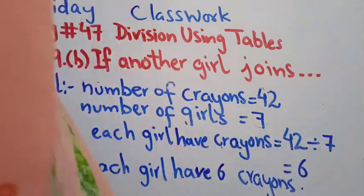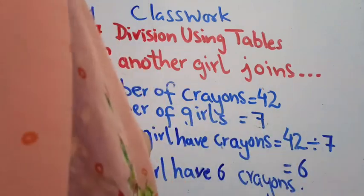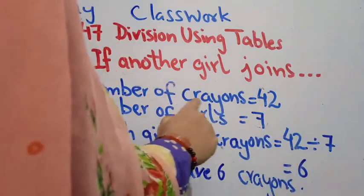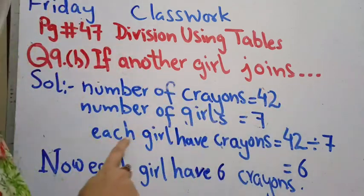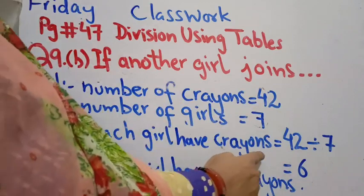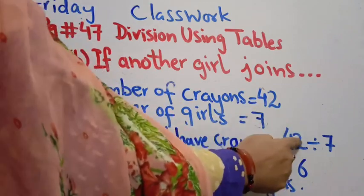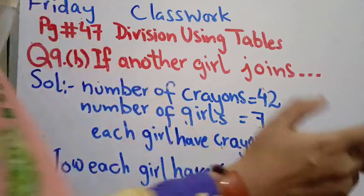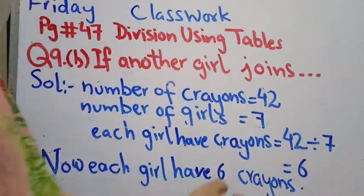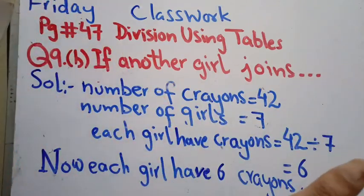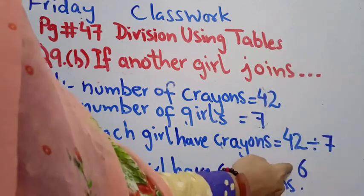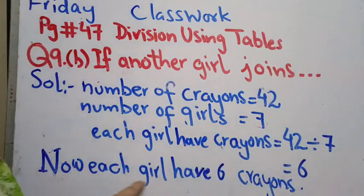I write these statements: number of crayons are same, 42. Number of girls are 7. Each girl has crayons - we have to divide 42 by 7 because 7 girls are there now in a group. We know where 42 comes in 7 table: 7 times 6 is 42. So now each girl has 6 crayons.